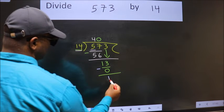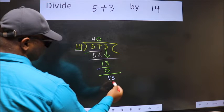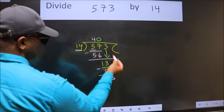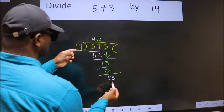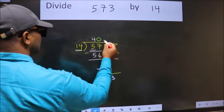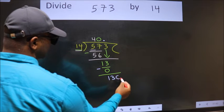Now we subtract. We get 13. Over here, we did not bring any number down, and 13 is smaller than 14. So now we can put dot and take 0.